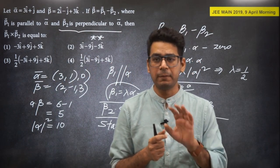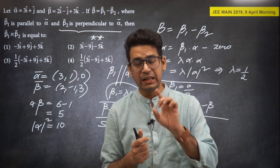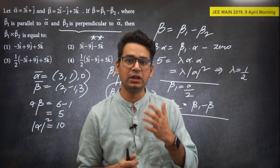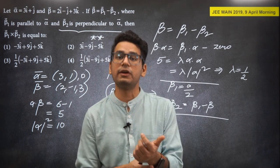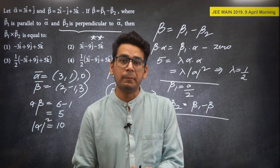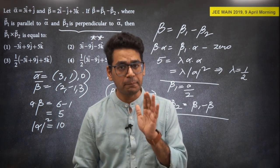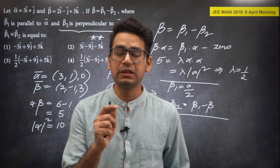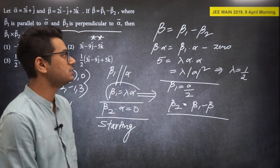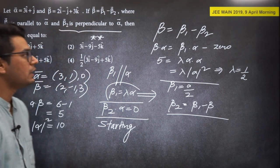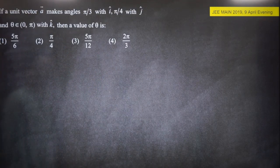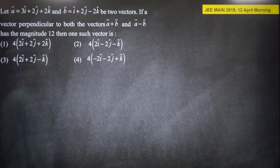Beta2 = beta1 - beta (from the decomposition), giving all component values. This question is lengthy but not difficult — take your time, no silly errors. Solve the cross product for the final answer.